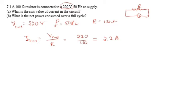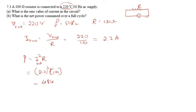The power consumed over a full cycle is P = I_RMS² × R = (2.2)² × 100 = 4.84 × 100 = 484 watt.